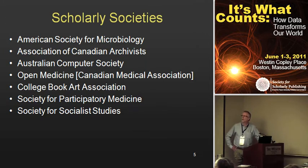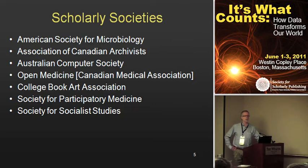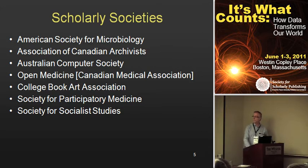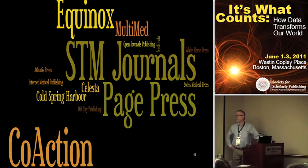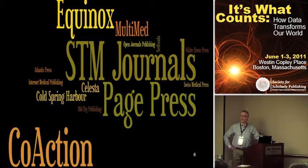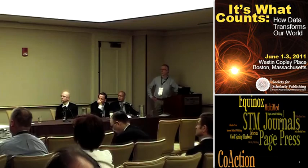The others are a good cross-section of the types of societies currently using OJS. Open Medicine is probably a whole presentation in itself — it's basically a breakaway journal from the Canadian Medical Association when the editorial board resigned en masse over concerns about interference in the editorial process and advertising revenue. They went open access and used OJS to set up a journal that is now fairly healthy and flourishing. There's also a range of commercial and quasi-commercial publishers using OJS, showing a fair bit of uptake in even the commercial publishing sector.